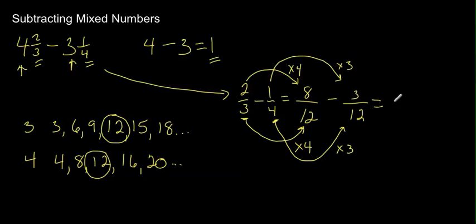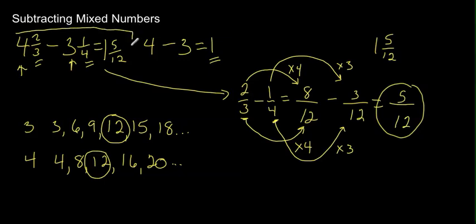And now, we just do the subtraction. So, we have something over 12. It's just going to be 8, subtract 3 is 5. So, now, I take this fraction, and I put it with this 1, and it will give me 1 and 5 twelfths. Okay? So, that means our answer is 1 and 5 twelfths. So, 4 and 2 thirds subtract 3 and a quarter equals 1 and 5 twelfths. And that is our final answer.